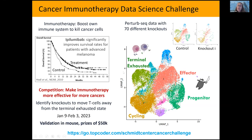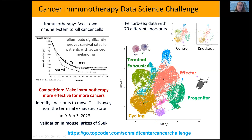We distinguish five different states of T cells: cycling, terminally exhausted (which you want to move away from for immunotherapy), highly effective, progenitor state (which you also want, because these T cells can move to the effector state), and everything else categorized as others. We're asking: here are 70 different knockouts, we show you all the data — for every perturbation you get to see whether you're more in the terminal exhausted state or the effector state — and which other perturbation should we run to lead to less cells in the terminal exhausted state and more in the cycling, effector, or progenitor state?